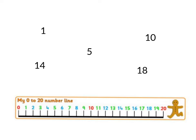Here I have some numbers. Read these numbers with me: 1, 14, 5, 10, 18. I want to put these numbers in order from the smallest number to the biggest number, and I'm going to use my number line down here to help me. Which number comes first? Which is the smallest number? The smallest number is 1.